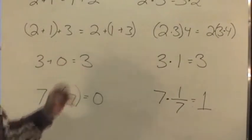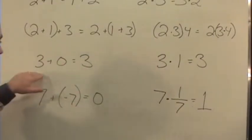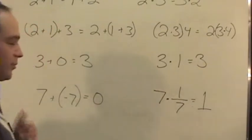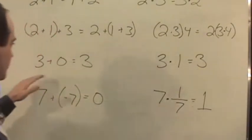Then there's the identity property. An example of that is anything plus 0 is itself. So 3 plus 0 is 3.